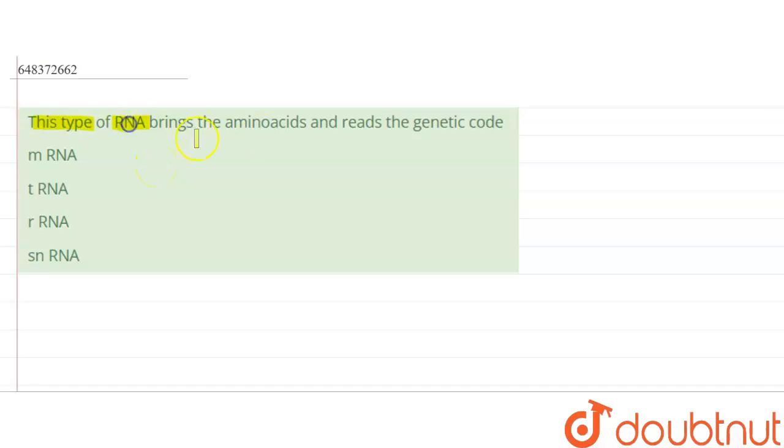This type of RNA brings the amino acids and reads the genetic code: mRNA or tRNA or rRNA or snRNA. Four options are given in this question and each option is provided with a name of RNA. So we are asked to select the correct type of RNA that brings the amino acids and reads the genetic code.